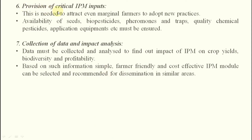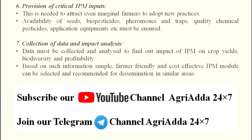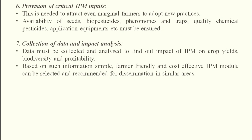The sixth step is provision of critical IPM inputs, which is needed to attract even marginal farmers to adopt new practices. Seeds, bio-pesticides, pheromone traps, light traps, quality chemical pesticides, and application equipment must be ensured for marginal farmers too. The seventh step is collection of data and impact analysis — data is collected to determine whether the techniques successfully reduced the pest problem, and a module can be developed: if this condition occurs, apply these measures to increase yield and decrease pest problems.